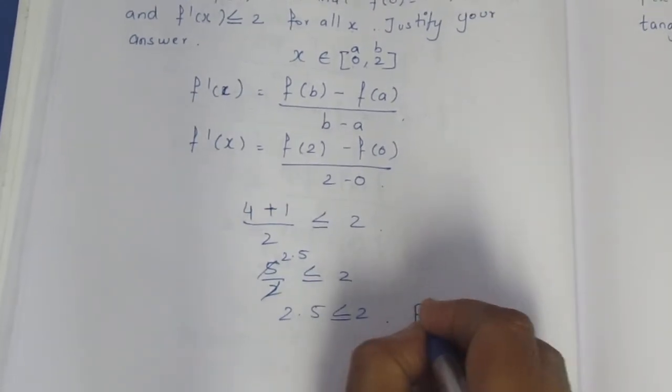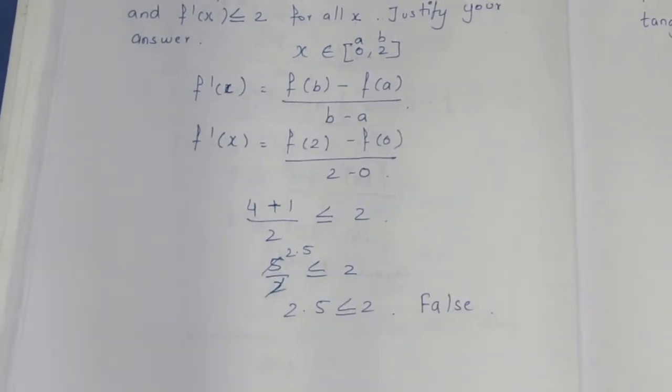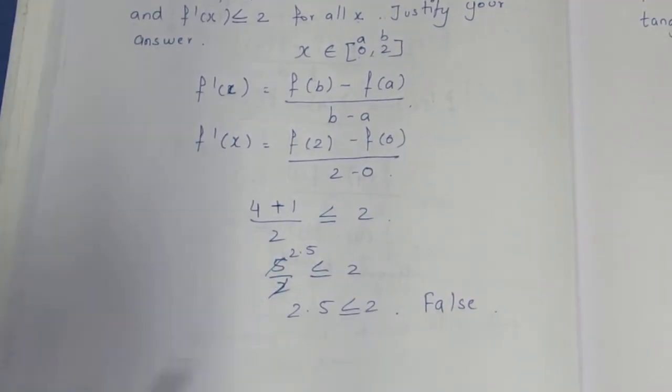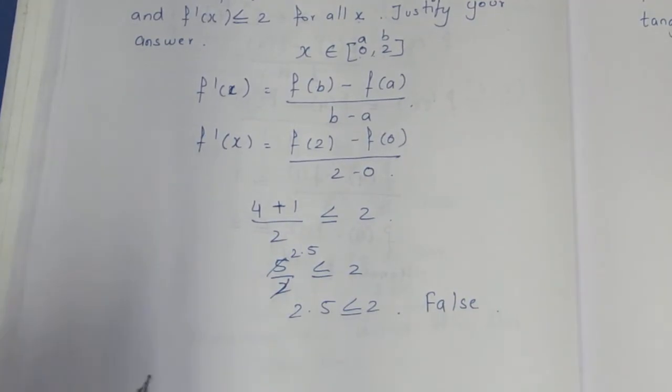In this case, 2.5 is not less than 2. 2.5 is definitely greater. 2.5 is greater than 2, so if it's less than or equal, this is not correct. Therefore...